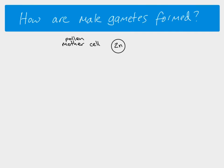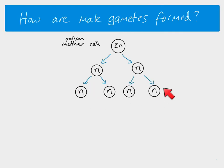This diploid cell divides by meiosis. We have our first meiotic division, then our second. We end up with four daughter cells at the end of meiosis, and they are of course all haploid.